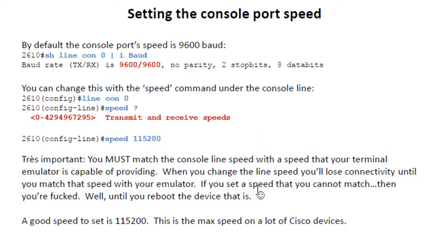Here's where the big problem comes in. If you set the speed to a speed that you cannot match on your terminal emulator and you're not able to get back into the router to change that — say you're connected through the console port and you change that speed and you can't match it on the other side, or it's a speed that's too high for the Cisco device to support, you're stuck. You won't be able to get back in the console port. You'll have to find either the auxiliary port or some other method to get in there, or you'll have to reboot the router to clear that setting. So if you do set this, for God's sake, don't write it until you're 100% sure that that's a working speed.